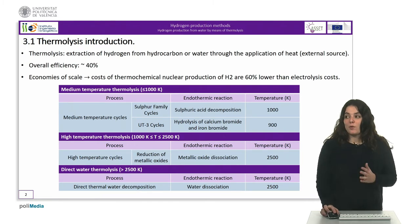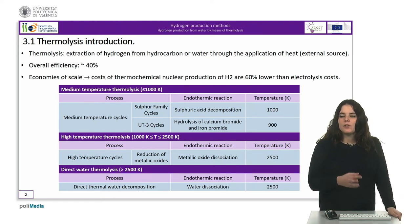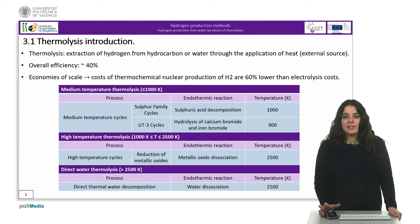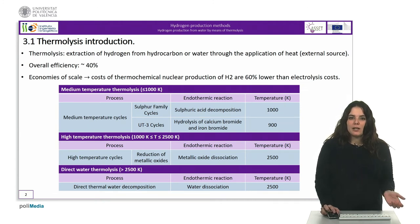The main types of thermolysis processes can be grouped into three depending on the operating temperature. First, the medium temperature thermolysis at temperatures between 900 and 1000 degrees Kelvin. There are several thermochemical cycles with the iodine sulfur cycle or I-S process being the most promising.